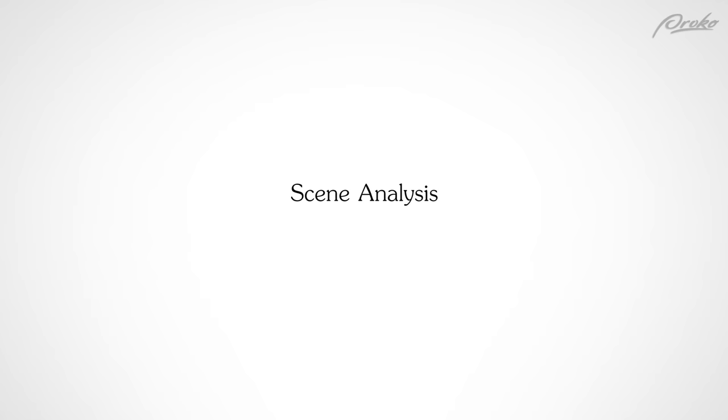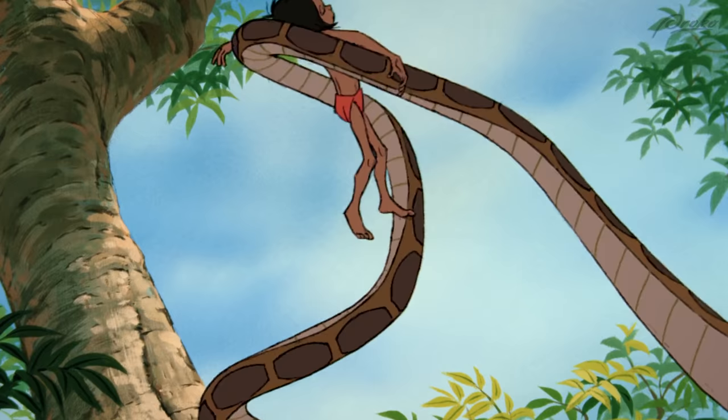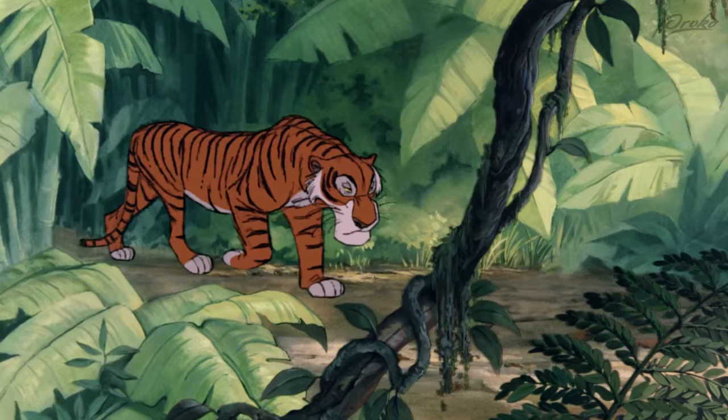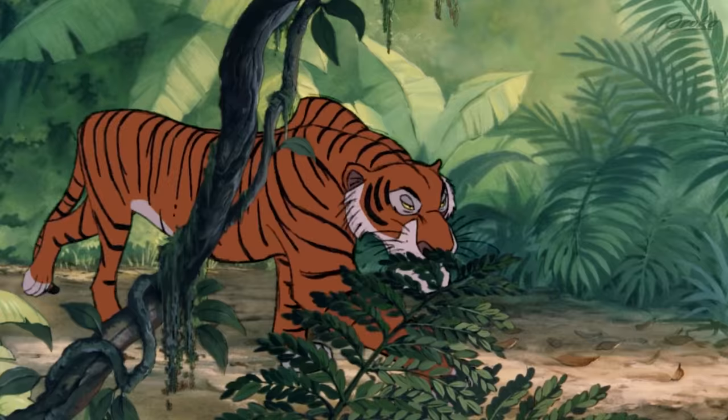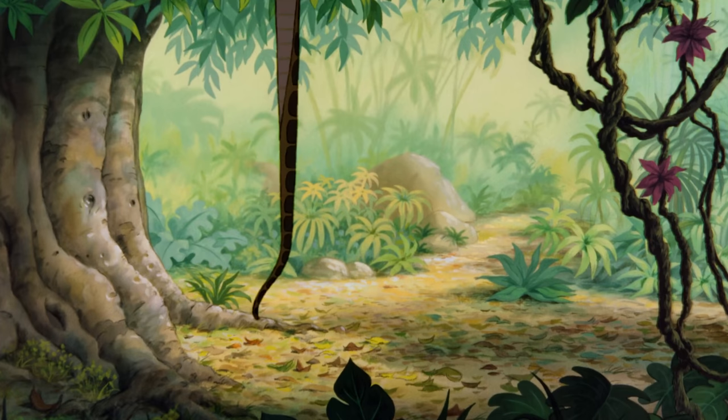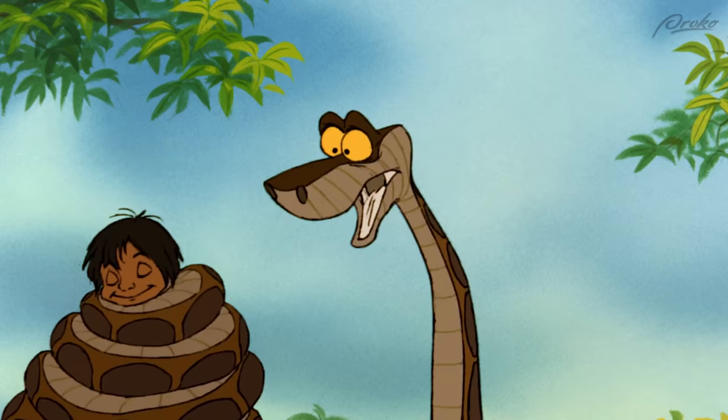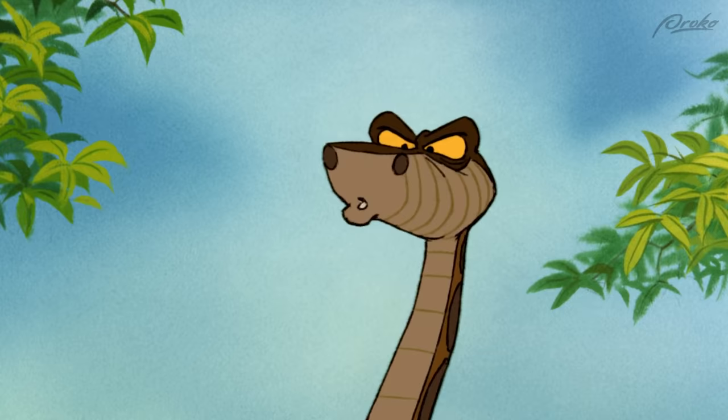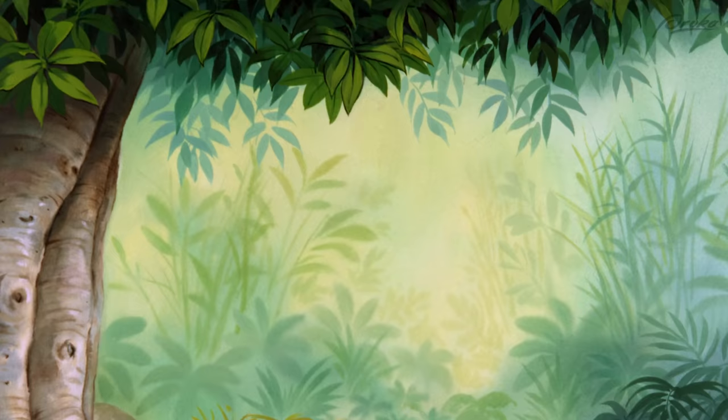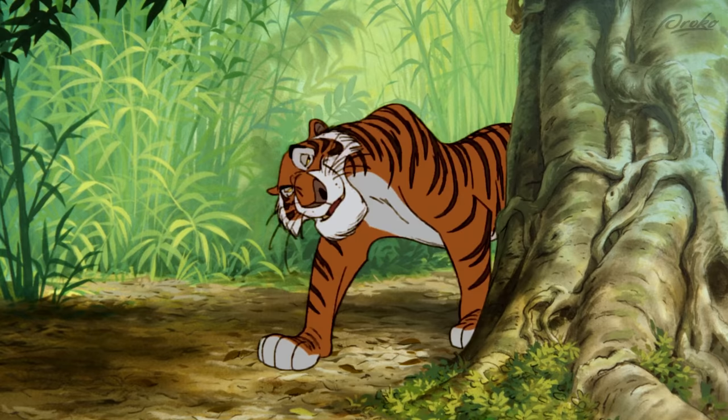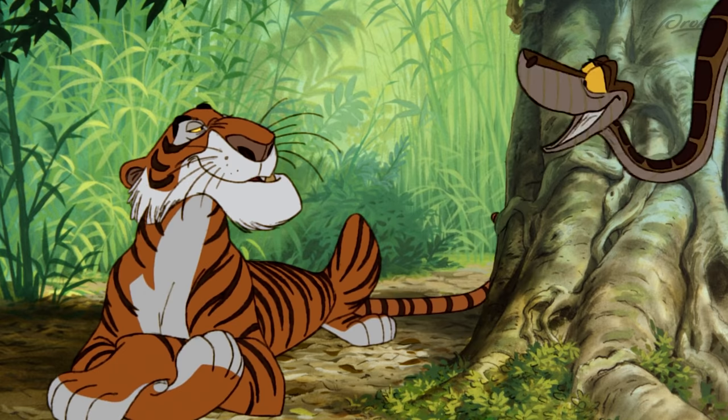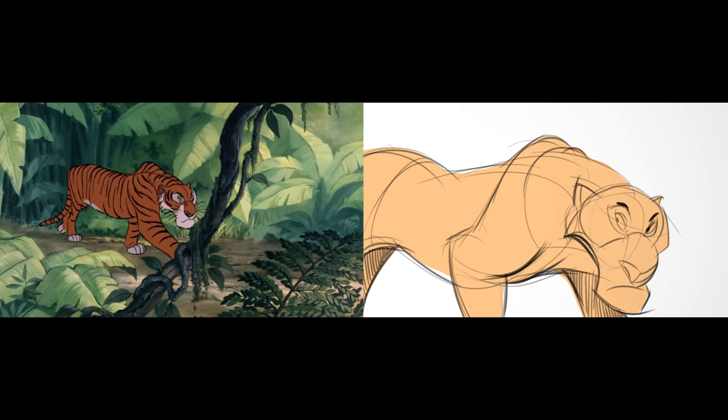[Scene plays: Kaa singing 'Trust in me' followed by Shere Khan's arrival. Dialogue: 'Oh, now what? I'll be right down. Yes, yes. Who is it? It's me, Shere Khan. I'd like a word with you, if you don't mind. Shere Khan. What a surprise. Yes, isn't it?']